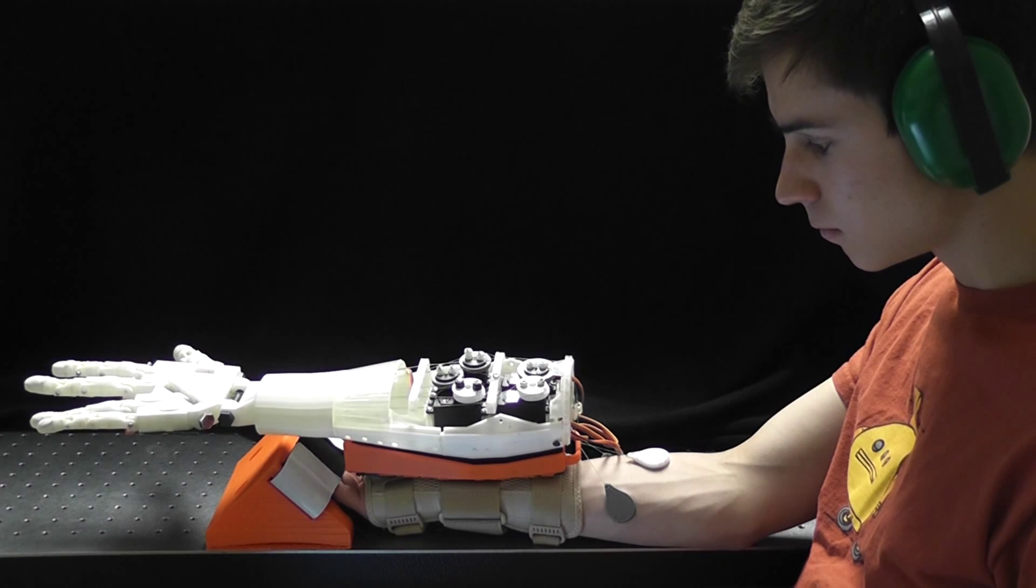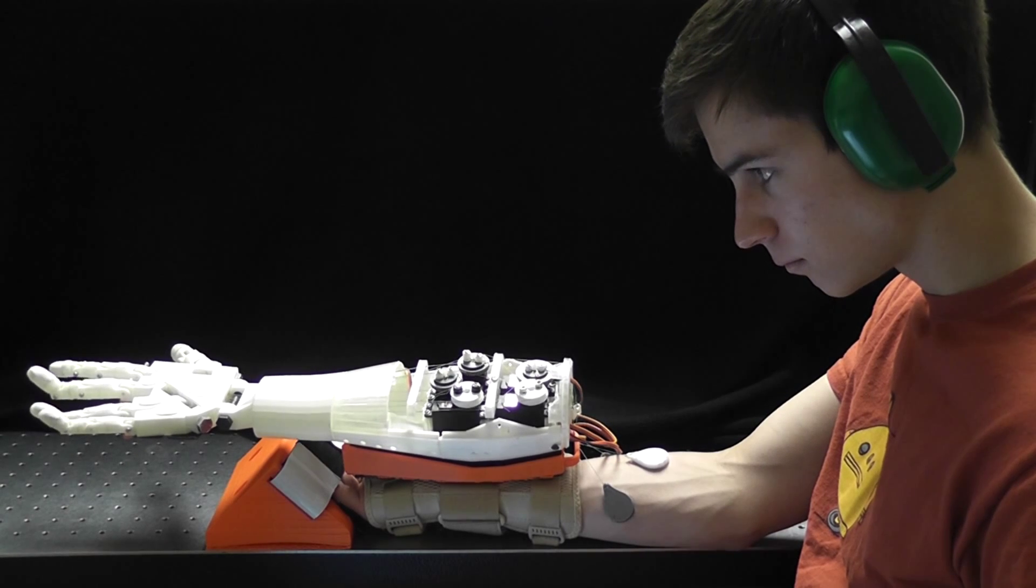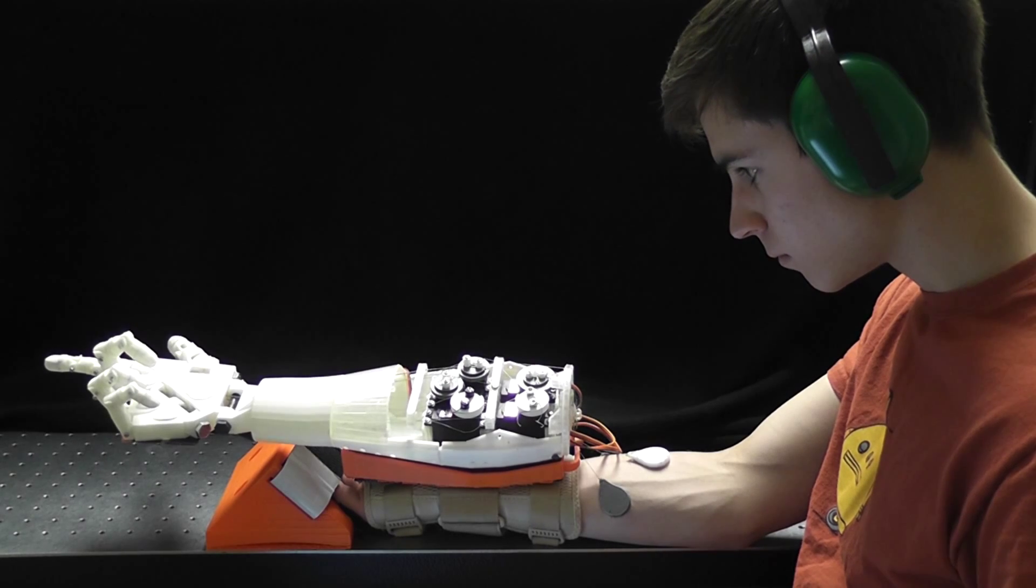Extending our device to multiple degrees of freedom, we attached two additional contact pads to the radial and ulnar sides of the forearm, corresponding to the thumb and middle finger joint angles, respectively.